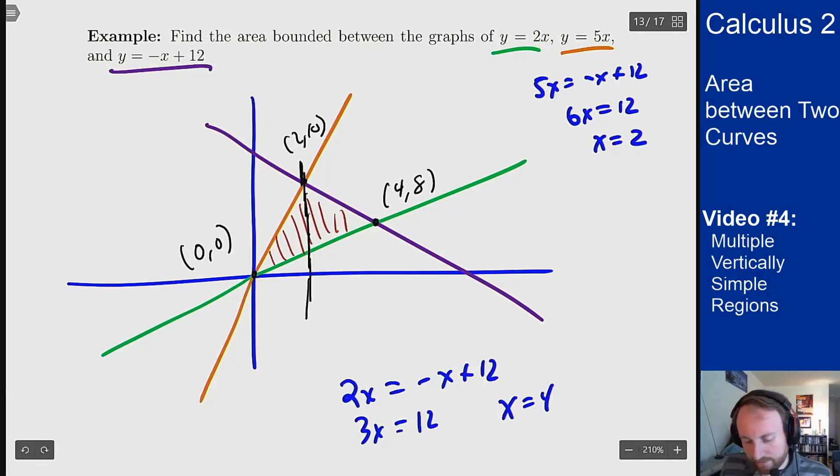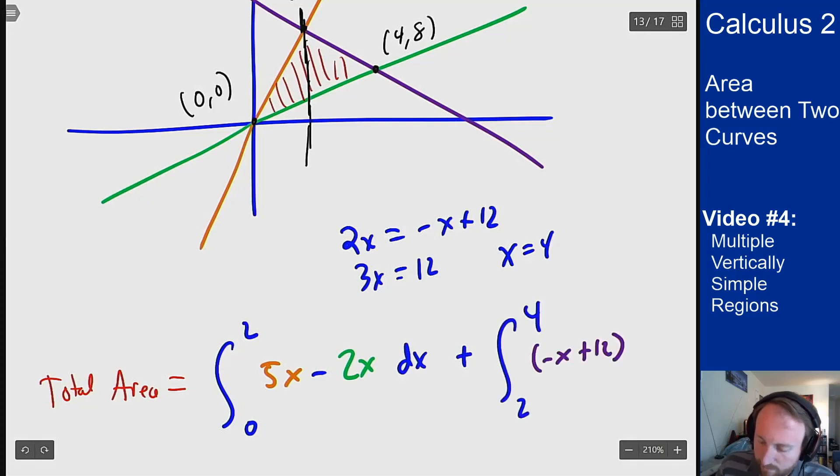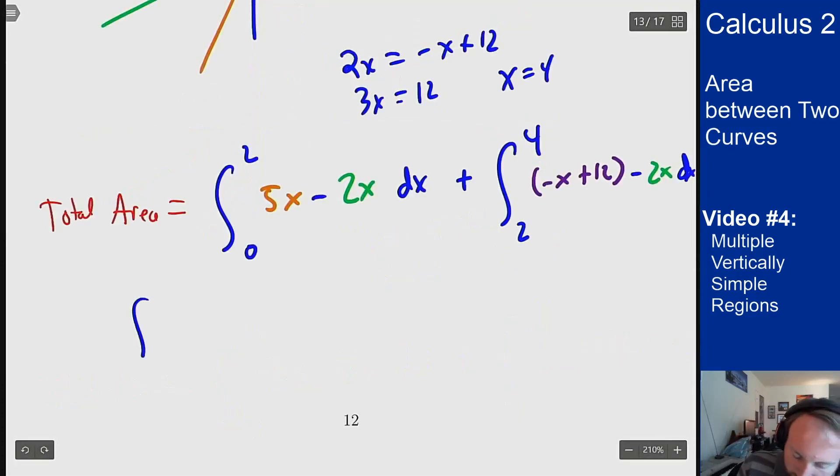So my total area is going to be an integral from 0 to 2 of orange minus green plus an integral from 2 to 4 of purple minus green. And now we just have to solve out these integrals. This will be an integral from 0 to 2 of 3x dx plus an integral from 2 to 4 of 12 minus 3x dx.